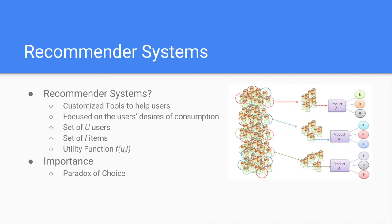There are many online services nowadays that use recommender systems. E-commerces are famous for suggesting items for users, such as Amazon. Other services also use the same technologies, such as Netflix, MovieLens, YouTube, etc.